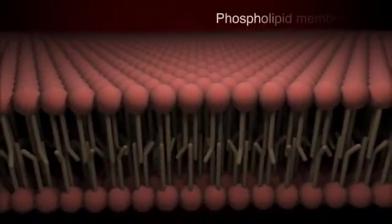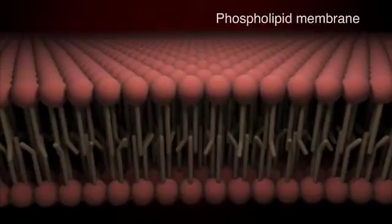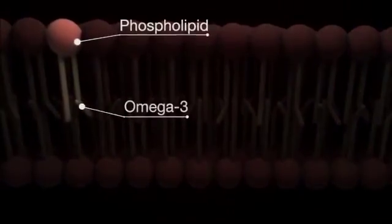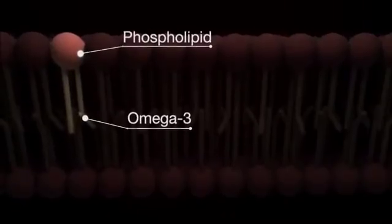Our bodies are comprised of millions of cells, and the cell walls are made up of phospholipids. The cell wall is a vital membrane that protects the cell's integrity. The more omega-3 fatty acids in the cell wall, the more flexible it is and the better it functions.